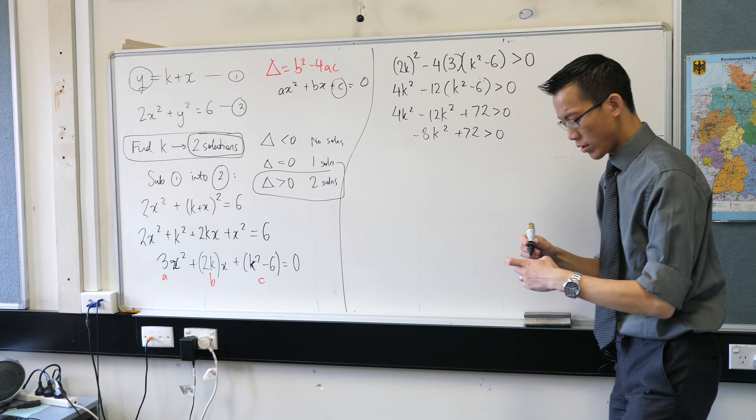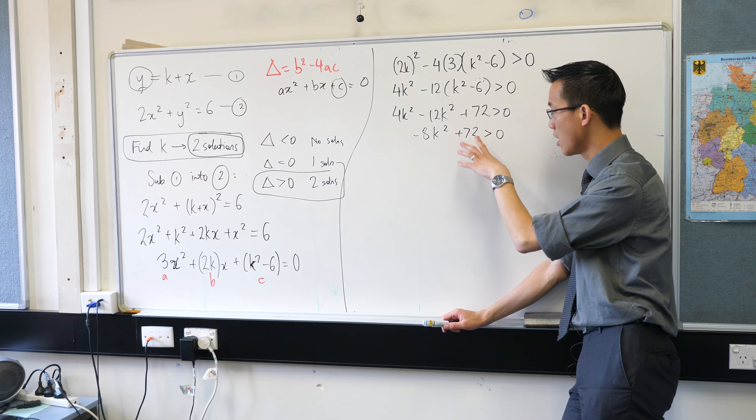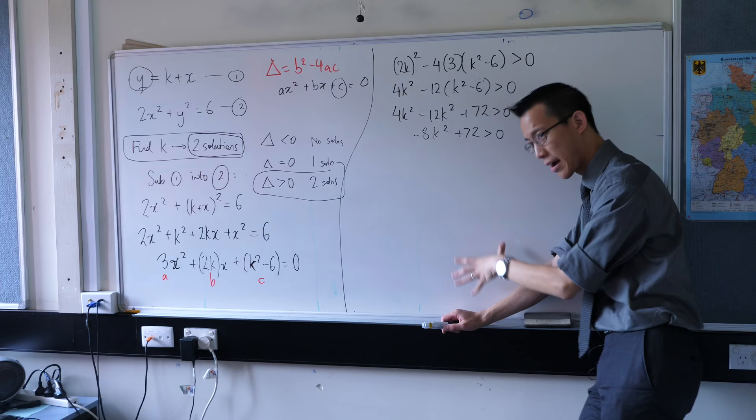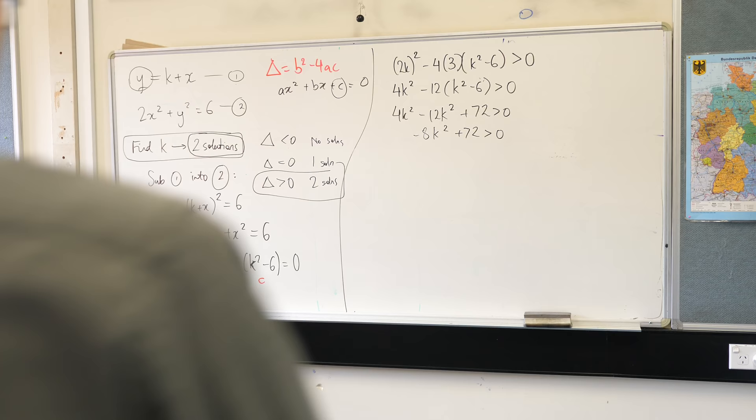At this point, what's your instinct? What should I do at this point? Solve for k. I want to solve for k, so I'm quite close to getting there. It's a quadratic, so I probably want to end up factorizing.